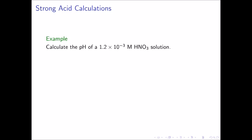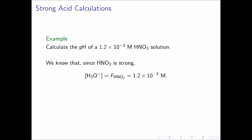Since nitric acid is a strong acid, we know that the concentration of hydronium ion is going to be equal to the formal concentration of the nitric acid, which in this case is 1.2 times 10 to the negative 3 molar. Therefore, we can immediately calculate the pH, which is the negative log of the hydronium ion concentration. This is equal to the negative log of 1.2 times 10 to the negative 3, or 2.92.